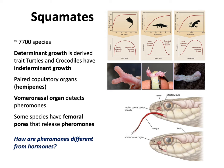Squamates, unlike turtles and crocodiles, exhibit determinate growth — not that different from what we experience. The idea is you grow up until a certain point, after which growth slows down. You can only get so big as a lizard or a mammal. Turtles and crocodiles, on the other hand, seem to have indeterminate growth — as long as they stay alive they can continue to get larger. You don't see this with squamates, so lizards and snakes don't experience this.